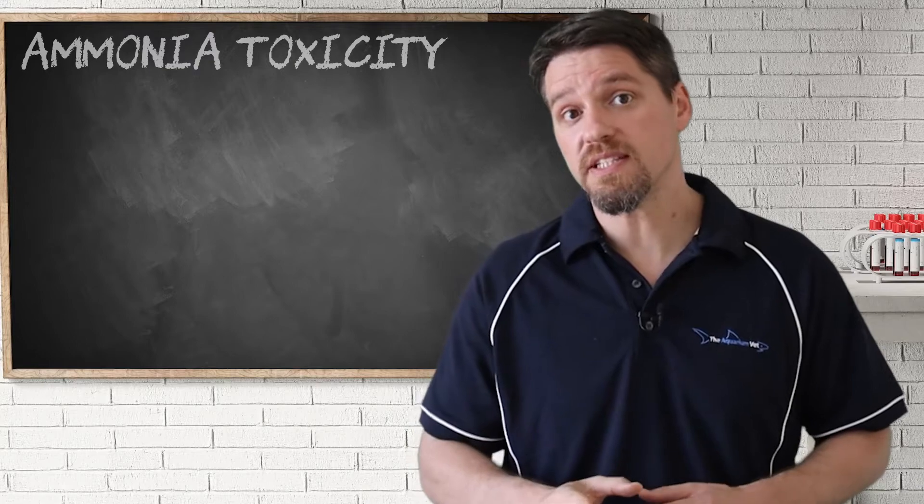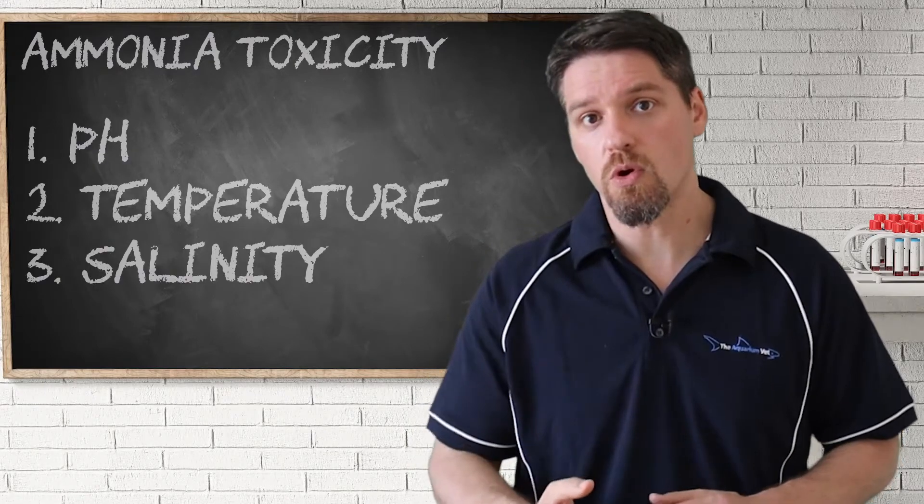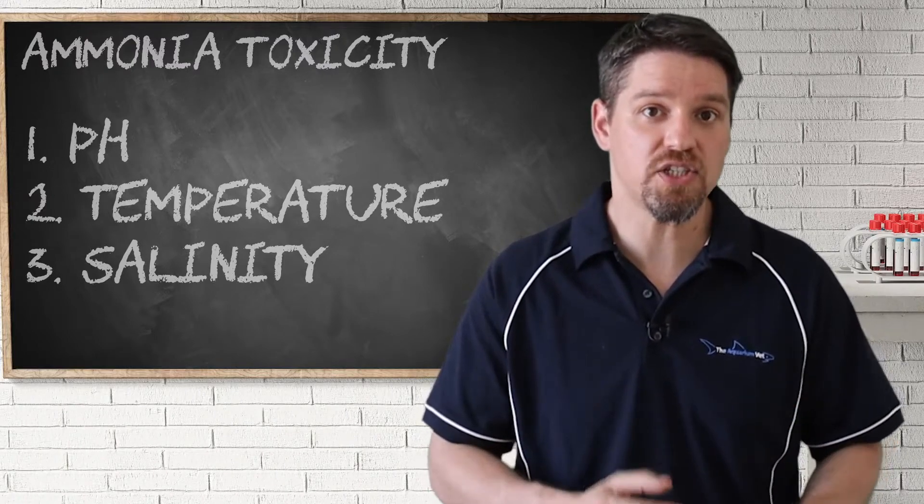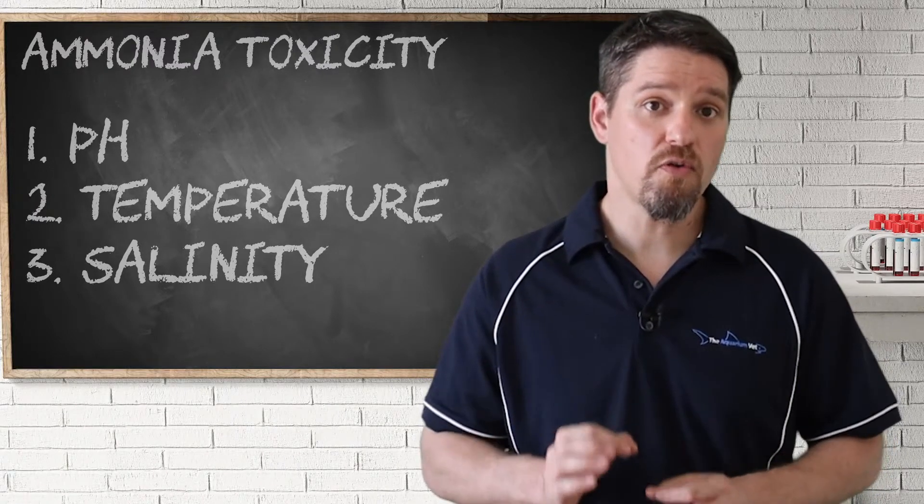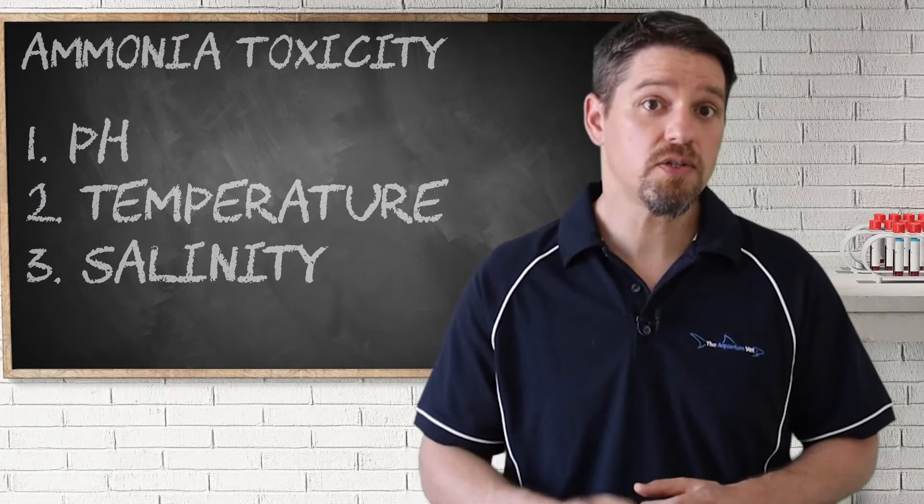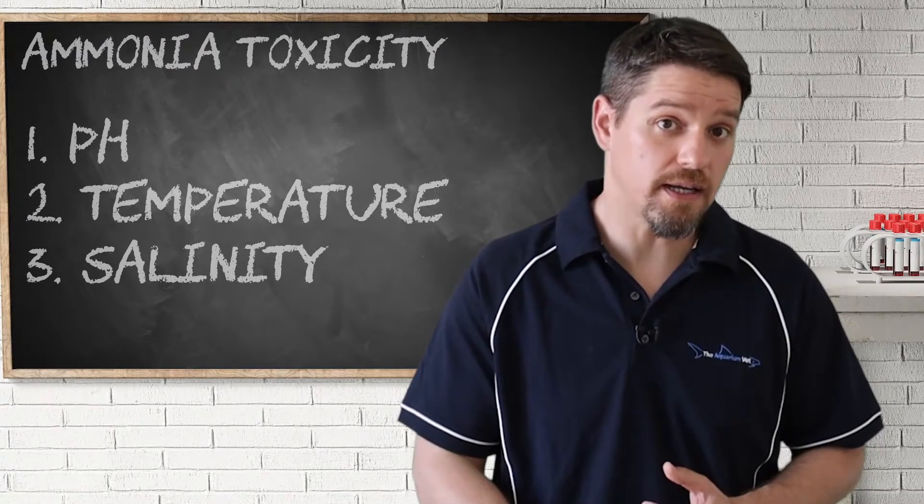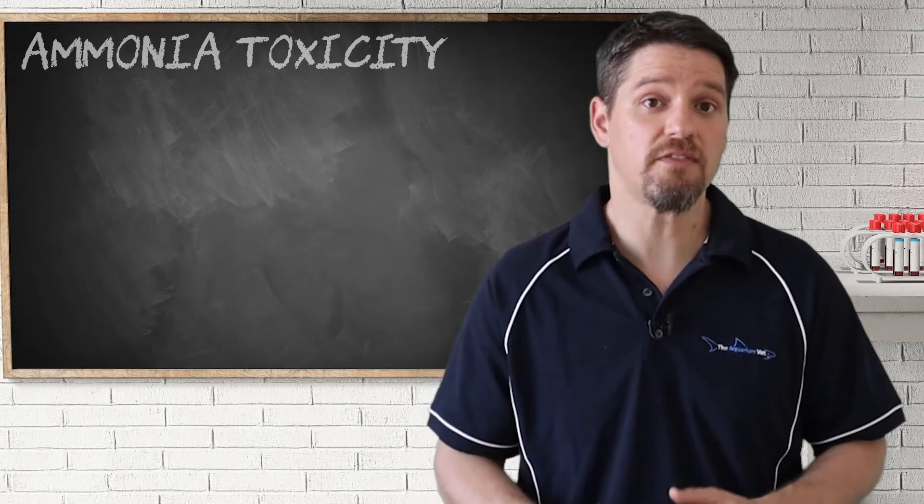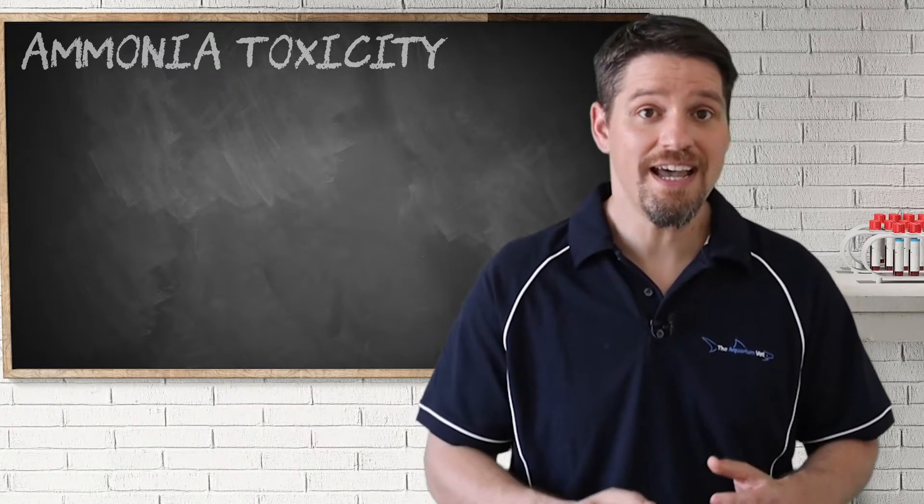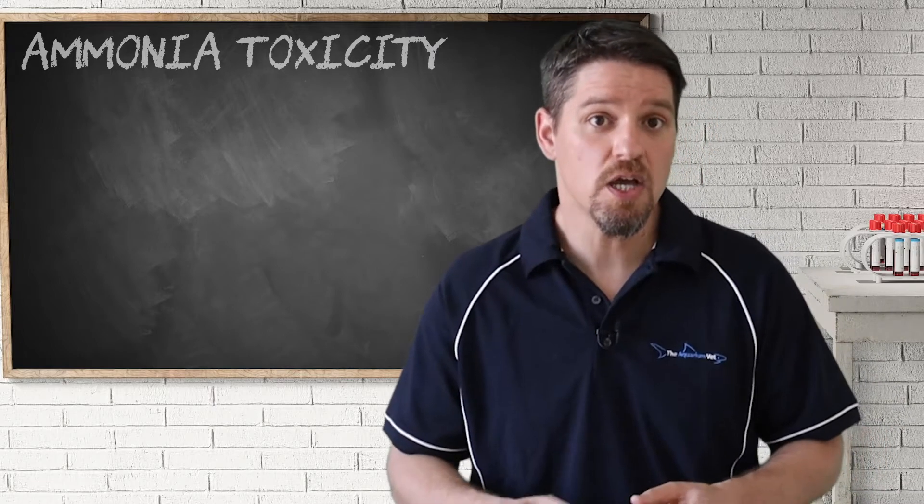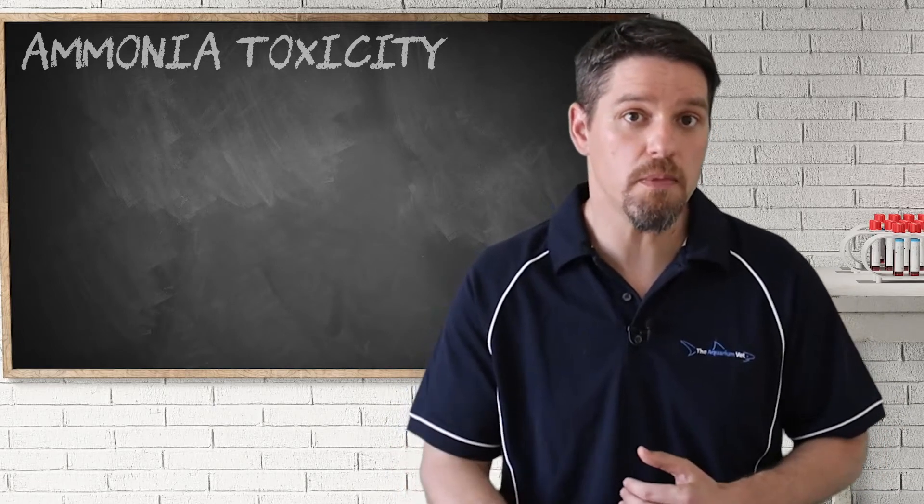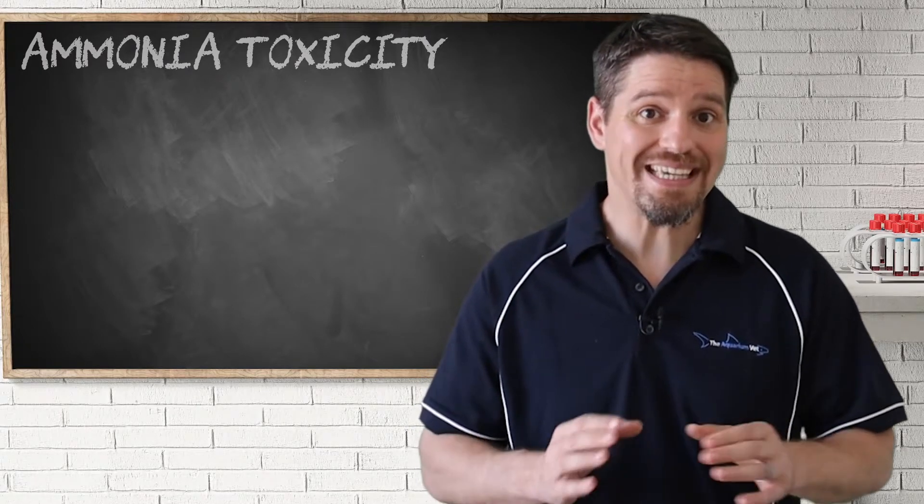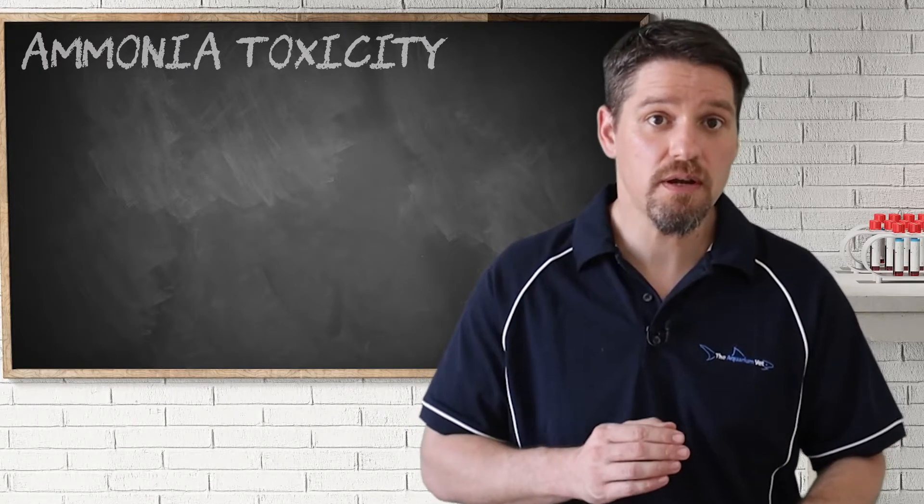Recall from the ammonia lesson that there are three very important water quality parameters that can have an effect on the amount of toxic ammonia, or NH3, that is present. We've already touched on the pH, and the other two are temperature and salinity. We can use this to our advantage to help reduce the amount of toxic ammonia that is present and actually shift that chemical equation to the right with the less toxic ammonium being the predominant form.